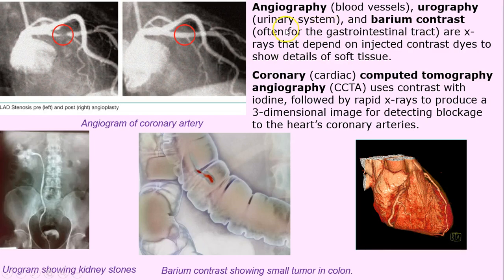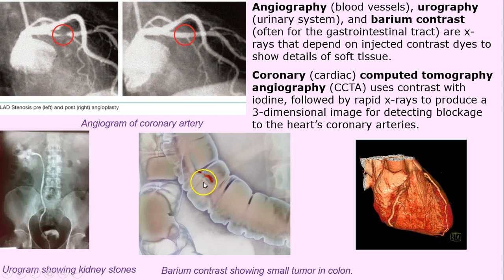In angiography you can see a stenosis, or thinning, of a coronary artery — a serious problem that may require a stent or bypass. Urography uses the urinary system — you can see kidney stones and the ureter going down to the urinary bladder. We use barium for the GI tract; in the center image you can see a cancerous lesion on what looks like the transverse colon. Contrast can be injected or swallowed as barium.